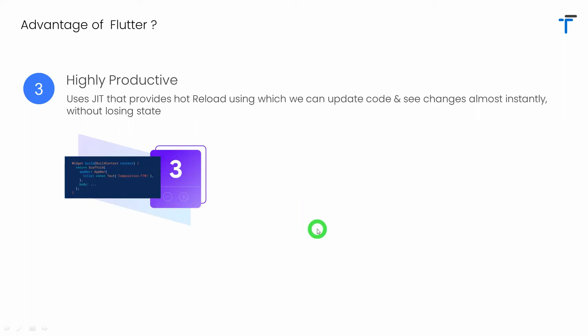Flutter is highly productive and saves a great amount of time in application development. Flutter uses JIT — just-in-time compiler — to compile your program. Using JIT, we get a facility called Hot Reload. Whenever there are changes to be done in the code, you just save your code and it will update your app during runtime, and you can see the changes almost instantly without losing the state of your application.